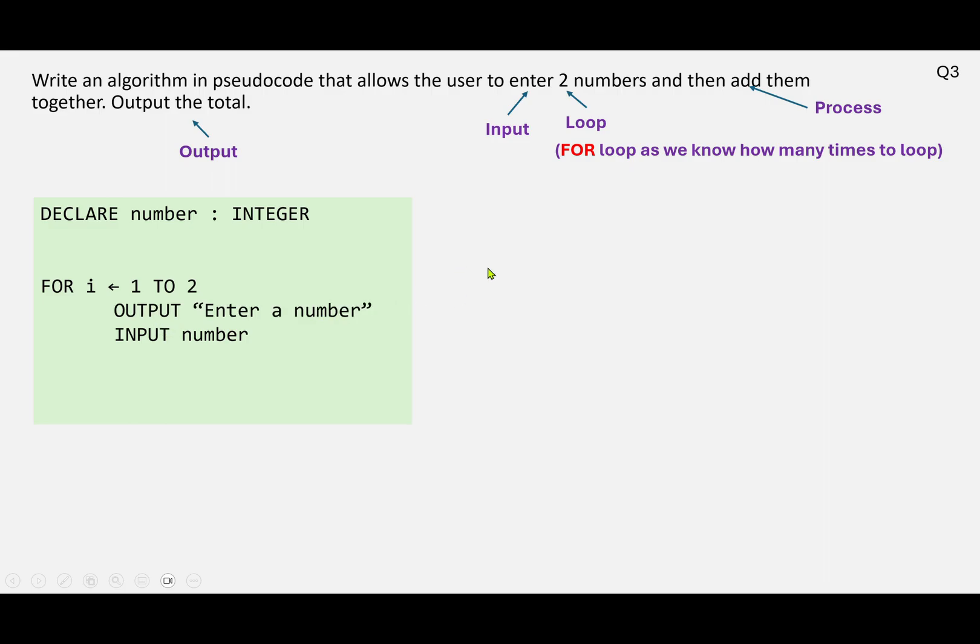And we need to add the numbers together. So we're going to need some sort of total here. So total is going to be assigned total plus number. So they enter a number and we add it to the total. So we've created a new variable here. So let's go ahead and declare that as well.